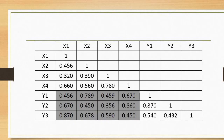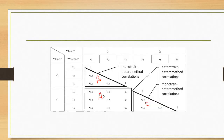Coming to B: these are the correlation coefficients of items of X with the items of X — meaning all items of X correlating with each other. We take the average of these values and get B. These are the correlation coefficients of the items of Y with each other, among themselves, and from these we get C. Remember to ignore the values on the diagonal. In summary: part A is hetero-trait hetero-method correlation, part B is mono-trait hetero-method correlation, and C is also mono-trait hetero-method correlation.